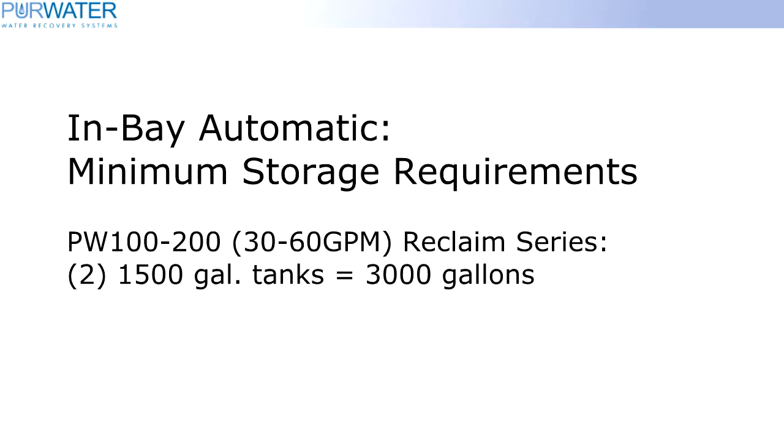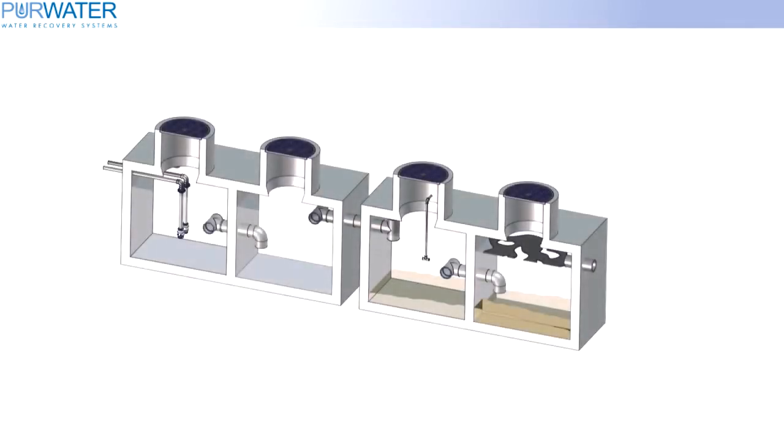For in-bay automatic washes, using a PW100 or PW200, a minimum of 3,000 gallons is required. This can be achieved by using two tanks that are each 1,500 gallons. A two-tank setup is the most basic setup for reclaimed tanking. Using a two-tank setup, the recirculation line is plumbed to the first tank, second chamber.